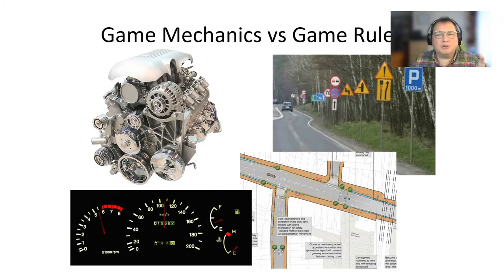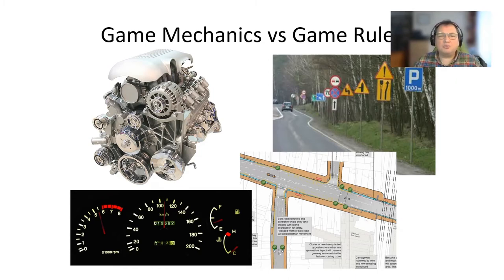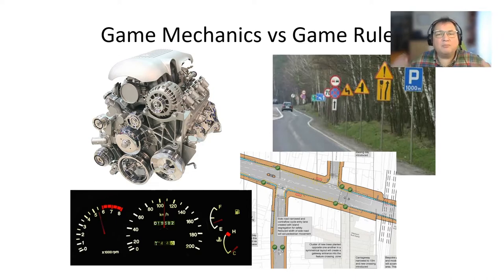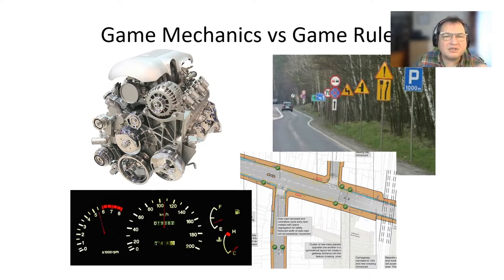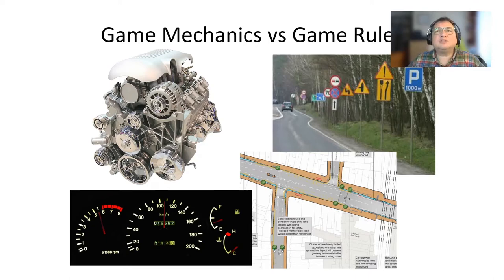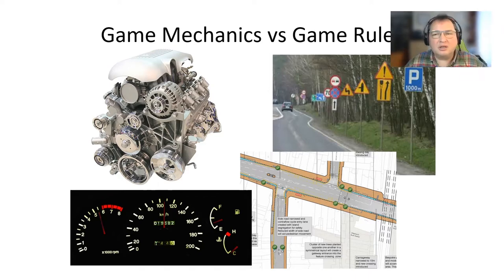If you think about Monopoly, the rules easily fit in a single A4 page, maybe two. They aren't very simple, but also not very complex. But the game mechanics for Monopoly is much deeper — it includes all the elements you can buy and sell, all the prices, all the locations, even the texts printed on the cards. And the player doesn't need to know all aspects of the mechanics. That's something the game designer has to know, and the game designer must communicate this to the game developer in order to implement and create the game.